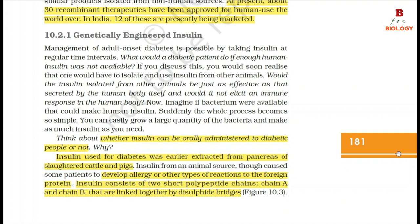Insulin used for diabetes was earlier extracted from the pancreas of slaughtered cattle and pigs. Insulin from an animal source caused some patients to develop allergy or other types of reactions to the foreign protein. Insulin consists of two short polypeptide chains — chain A and chain B — that are linked together by disulfide bridges.